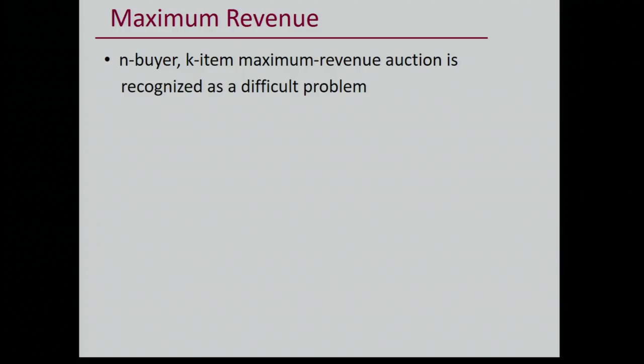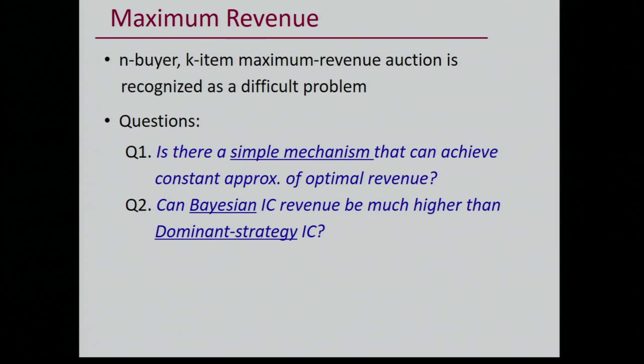30 years ago, Myerson solved the problem for finding the maximum revenue auction with one item and independent distributions. After that, for many years, people have been interested in the case when one wants to sell multiple items, and it's a difficult problem with still a lot of research going on.